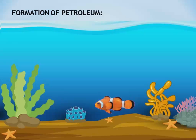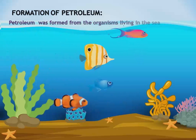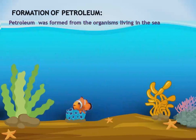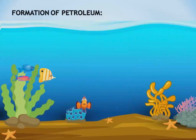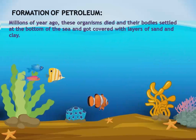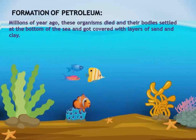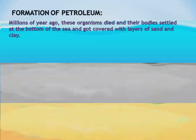Petroleum is a thick, yellowish to black colored dark liquid found beneath the earth's surface. Petroleum was formed from organisms living in the sea millions of years ago. These organisms died and their bodies settled at the bottom of the sea, getting covered with layers of sand and clay.